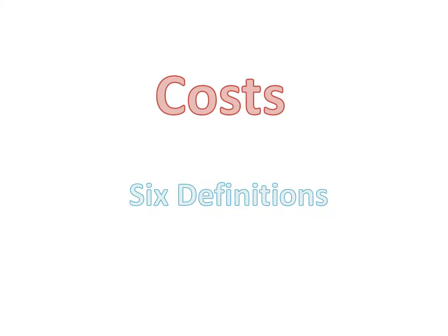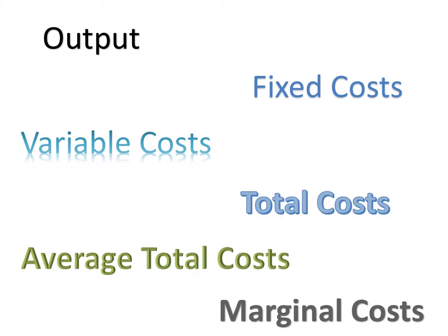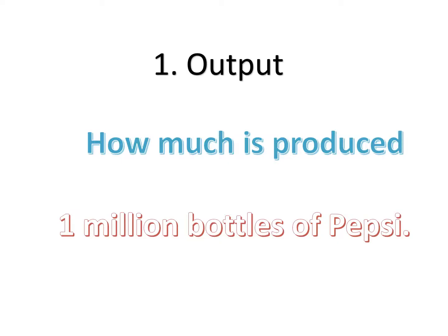In this video, we start to look at costs. We're going to go through and define six terms. Number one: output. Output is just what you think it is — it's how much is produced. So Pepsi might have output of one million bottles of Pepsi, a farmer might have 50,000 units of wheat, and an oil company could have a certain number of barrels of oil produced.